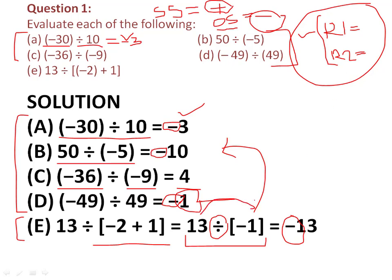Applying rule two — divide numerically — 13 divided by 1 gives 13, and since we already wrote the negative sign, the answer is minus 13. It doesn't matter how long the expression is; you just follow the rules. If there is a bracket, solve the bracket first, then perform the division.